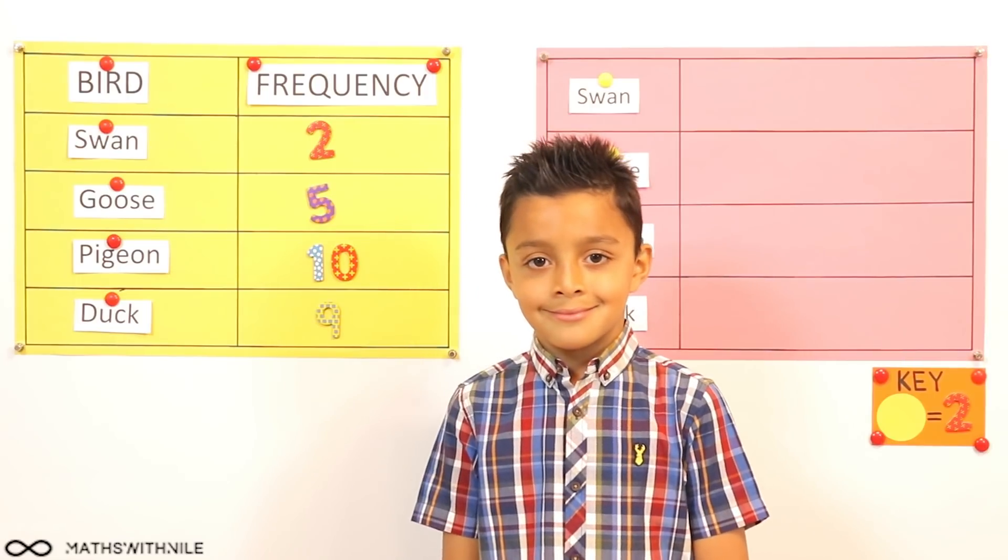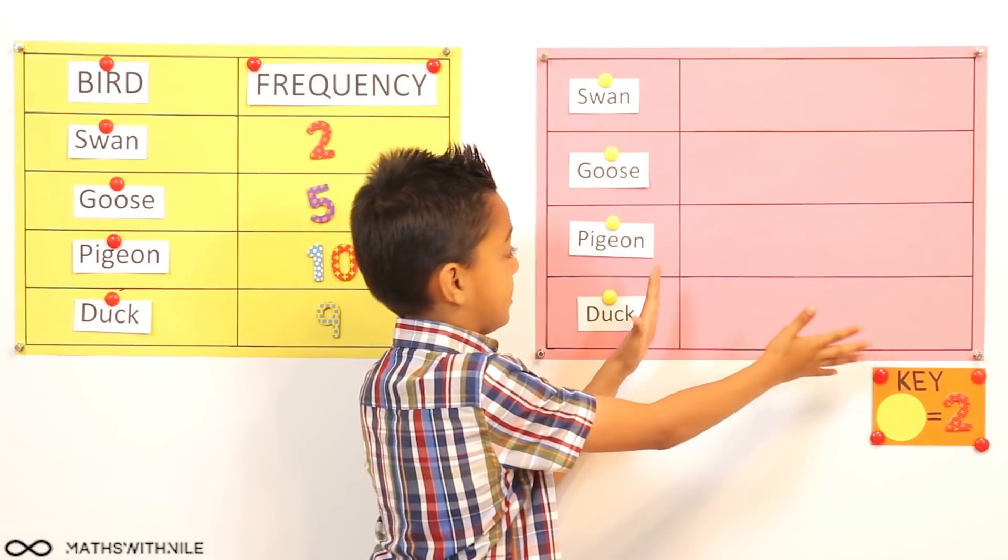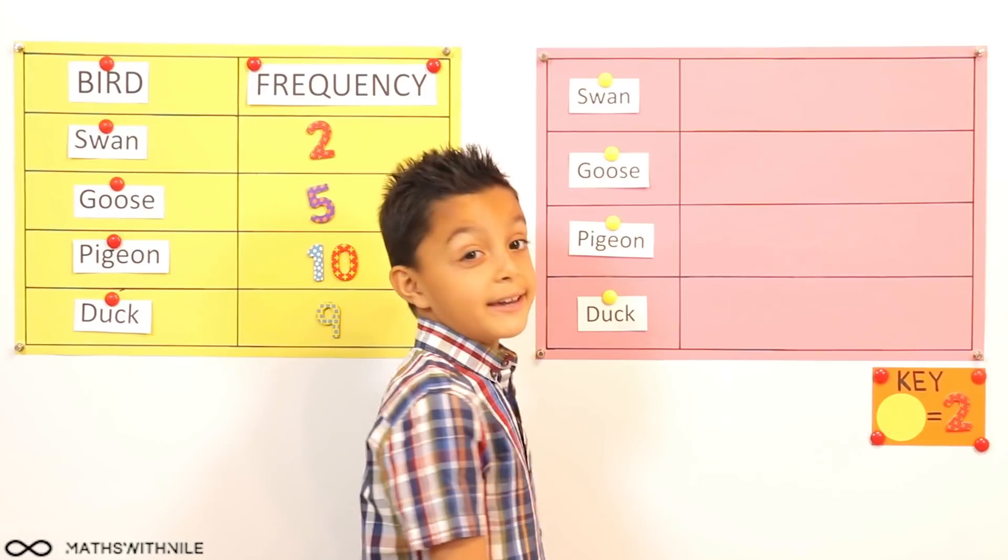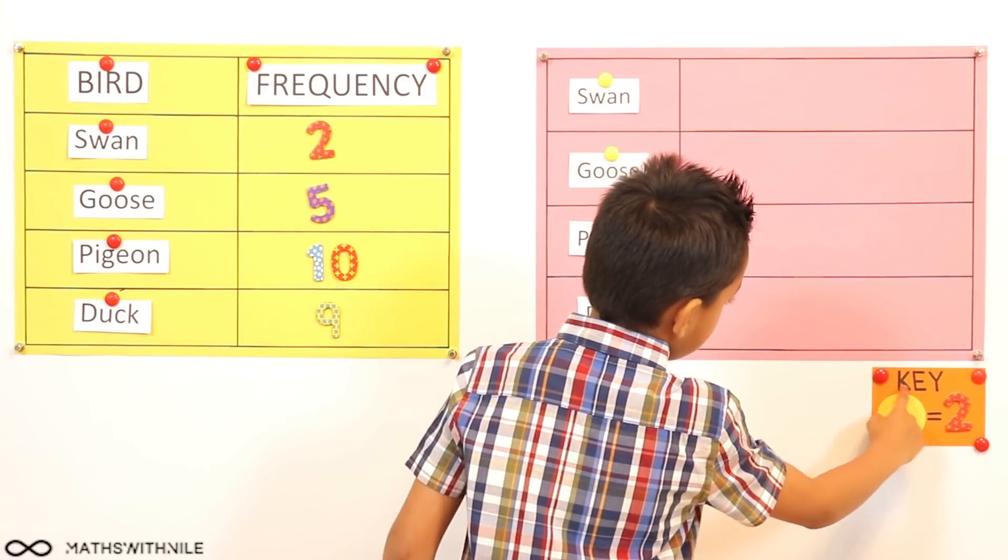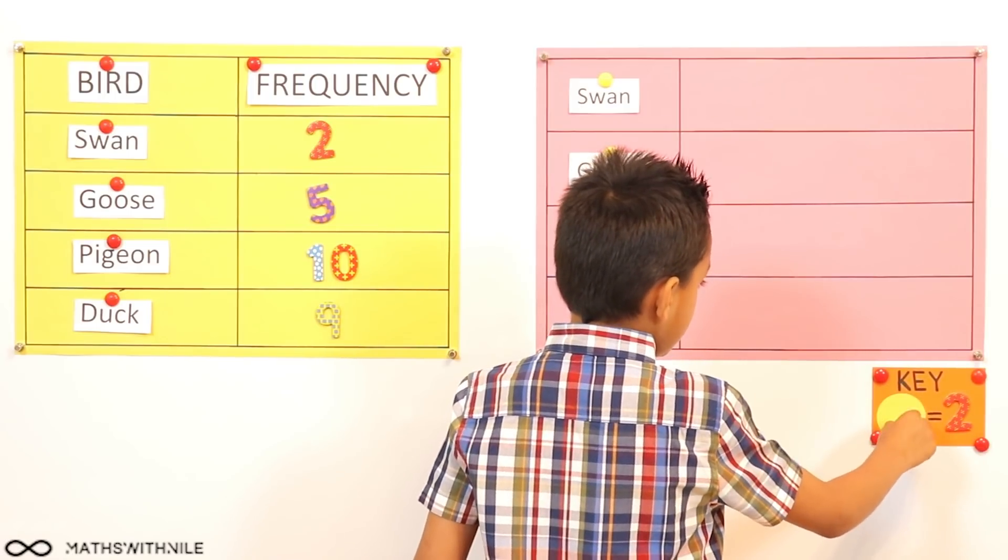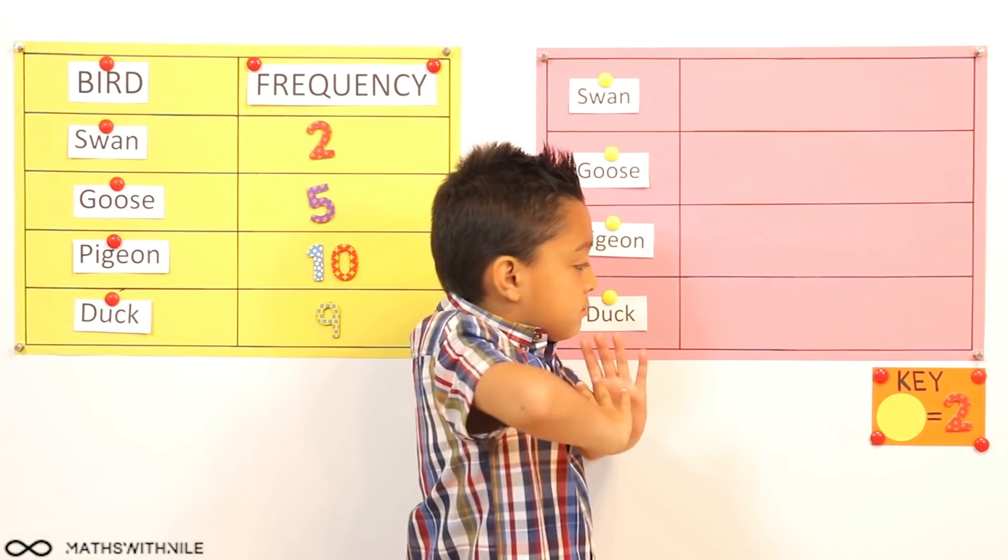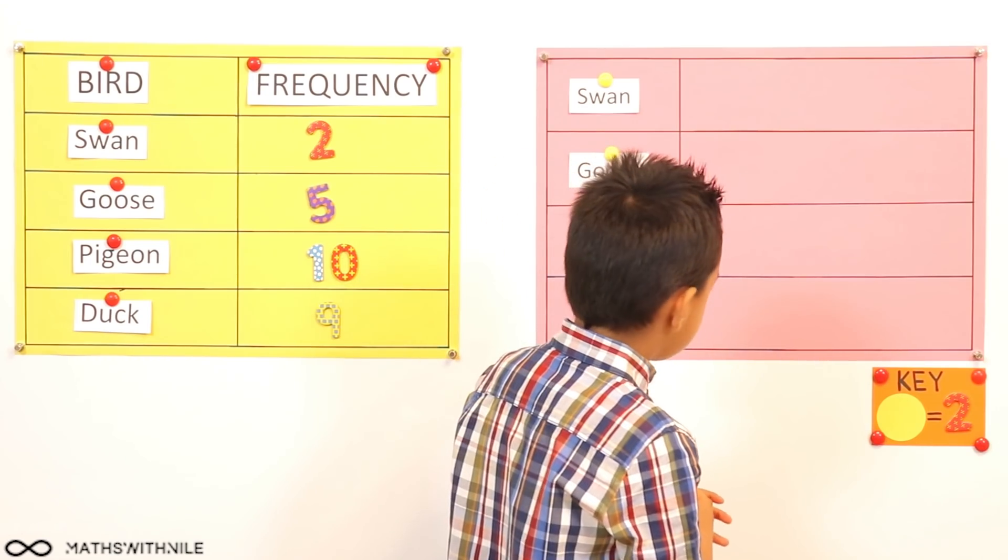So how are you going to put that into the pictogram? So we've got the setup for the pictogram on the right. Here. And what's the most important thing in the pictogram? The key. Okay, can you tell us about that key? The key is here. It says one circle equals two.